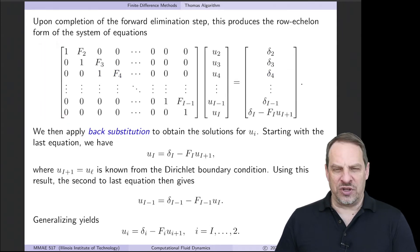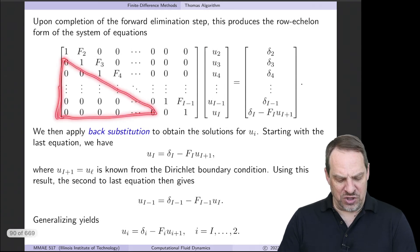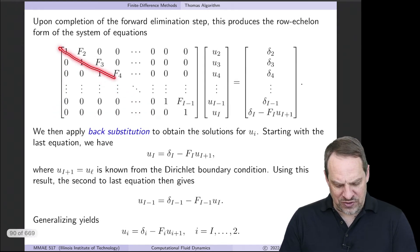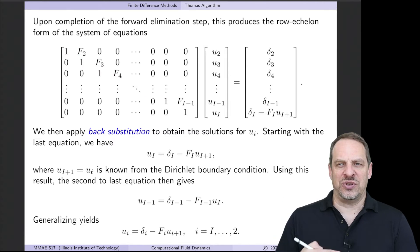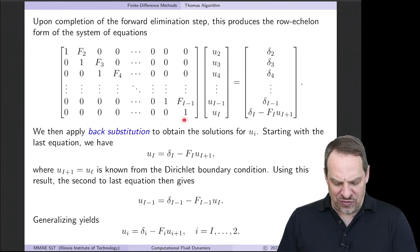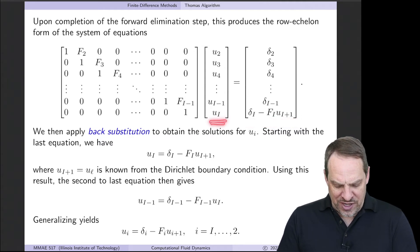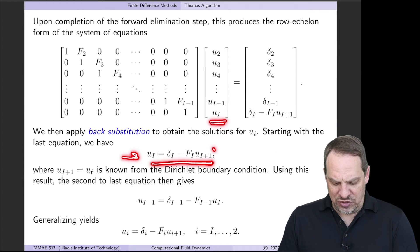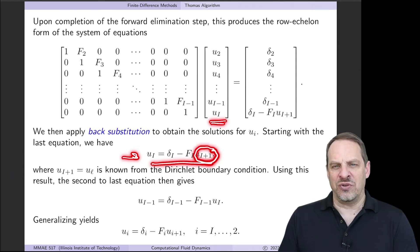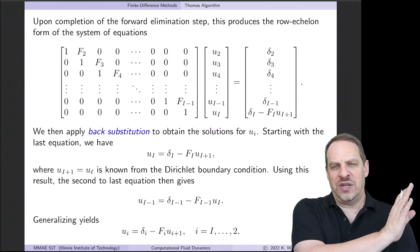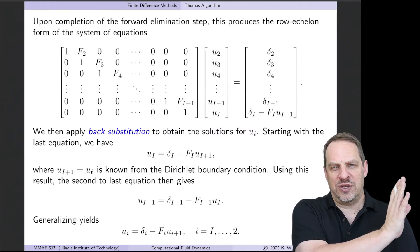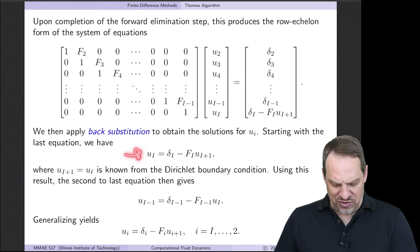When we complete that, we get the row echelon form of our system of equations, with zeros everywhere below the main diagonal, ones along the main diagonal, and then we do back substitution, because we can solve the last equation, which is just 1 times U cap i is equal to delta sub cap i minus F sub i U sub i plus 1. So we can solve for U sub i, and it's simply this. And you'll notice it involves the value at the boundary, U sub i plus 1. So in the extended fin case, that's the temperature at the tip of the fin. So we get this from the boundary condition.